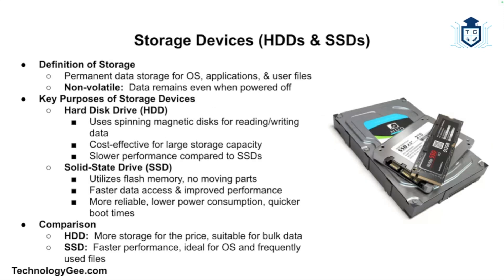Now let's talk about storage. Storage is where all data — including the operating system, applications, and user files — is permanently saved. Unlike RAM, storage is non-volatile, meaning data remains even when the computer is turned off. The hard disk drive, or HDD, is a traditional storage device that uses spinning magnetic disks to read and write data. HDDs are cost-effective for large storage needs but slower compared to newer technologies. SSDs — solid state drives — use flash memory instead of spinning disks, allowing for faster data access and improved performance.